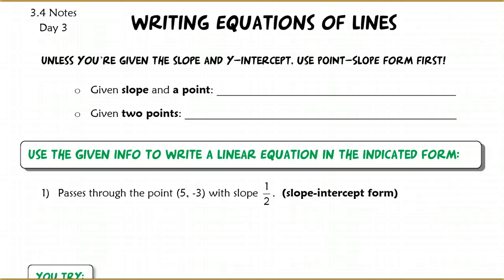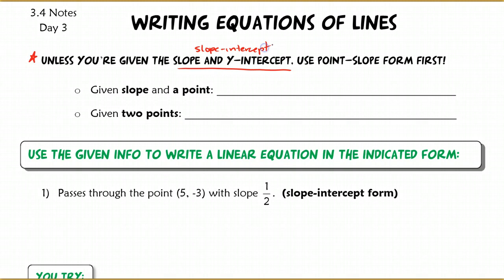There's a hint here: unless you're given the slope and y-intercept, always use point-slope form first. The only case where you don't start with point-slope form is if you're given the slope and the y-intercept, because then you can just use slope-intercept form. But in all other cases, always use point-slope form first. Really important.